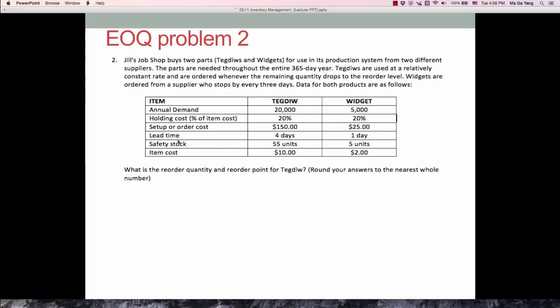As I said, if safety stock is given, then you need to just add it to your reorder point. So the question is asking what is the reorder quantity and reorder point for Tegdu, this particular item. And you round your answers to the nearest whole number.